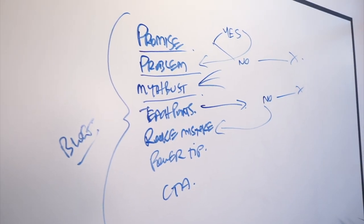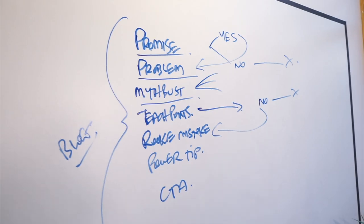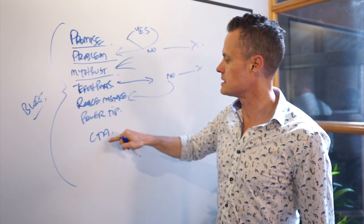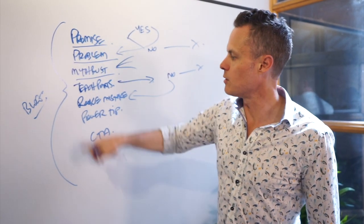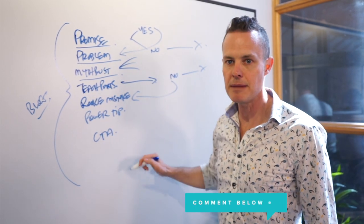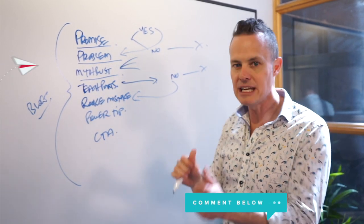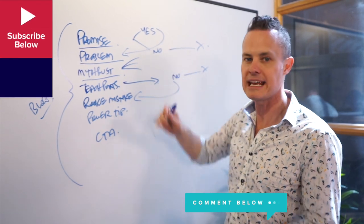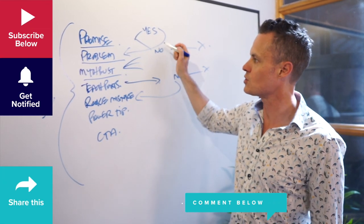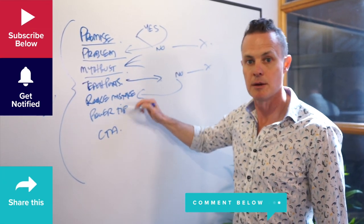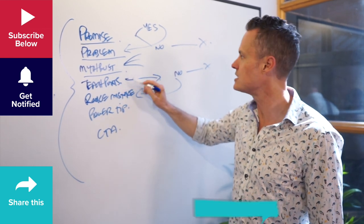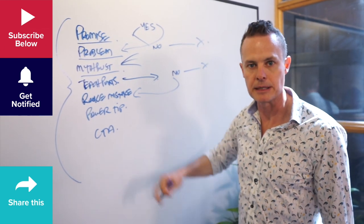So this is the content creation framework. Offer the promise. Outline the problem. Bust a myth. Teach the thing. Rookie mistakes. Power tips. Call to action. Put it into a blog post or a podcast or a presentation. But if you're using it in ManyChat, slice these up into individual conversations and always get an interaction from your subscriber to get them through to the next part of the conversation. And if they don't engage or they say no, exit them out so you're not spamming people.